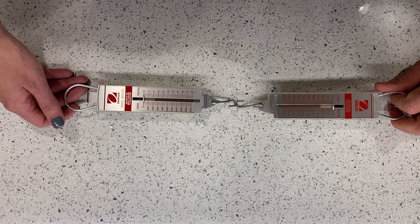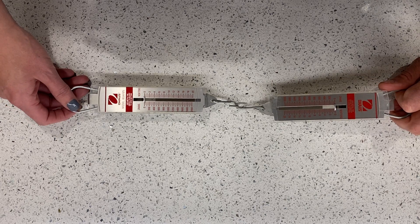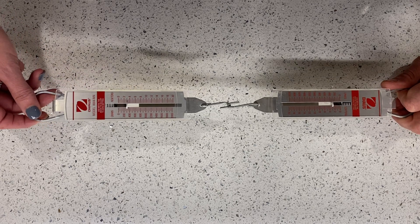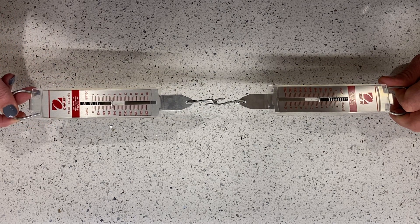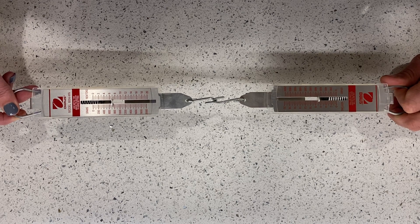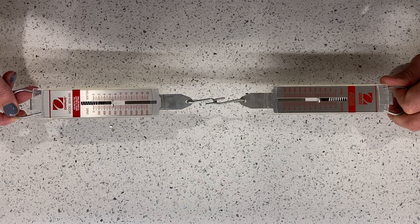So first, I'm going to have Mr. Cadigan just hold his end, and I am going to pull. So I am the only one pulling, and I am reading seven newtons of force on my scale. What are you reading, Mr. Cadigan? Seven newtons of force.